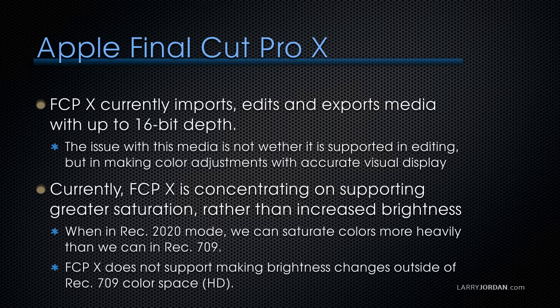When it comes to Final Cut, Final Cut currently imports, edits, and exports media with up to 16-bit depth. However, the issue is not whether bit depth is supported in editing, but how do we make color adjustments with an accurate visual display. Currently, Final Cut 10 is concentrating on supporting greater saturation rather than increased brightness. When we switch a Final Cut 10 project or library to Rec. 2020 mode, we can saturate colors more heavily than in Rec. 709. However, Final Cut 10 does not support making brightness changes outside of the Rec. 709 color space — so we can increase saturation a little, but we can't yet achieve the brightness levels required to meet Rec. 2020.